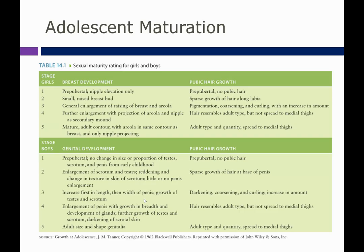The Tanner scale is a scale of secondary characteristics divided into five stages of sexual maturation for females and males, with development progressing from pre-puberty to early adult. There's a nice table in your textbook of sexual maturity ratings for girls and boys. The table is divided into girls and boys, covering breast development for girls and genital development for boys, and both girls and boys have pubic hair growth assessments.